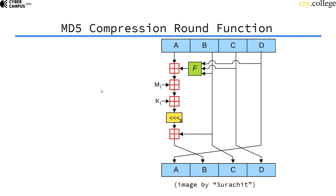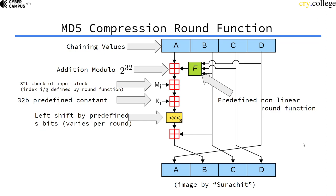Here we have four 32-bit values as the chaining values, and the chaining values are 128 bits long in MD5. This square here is the modular addition modulo 2^32. In the round function, a 32-bit chunk of the input block is added to these values here.